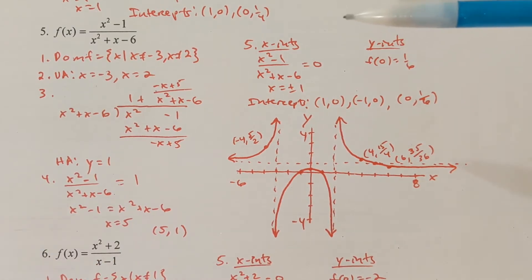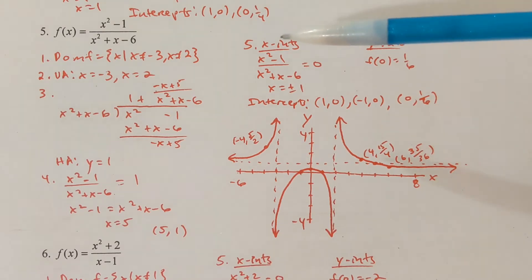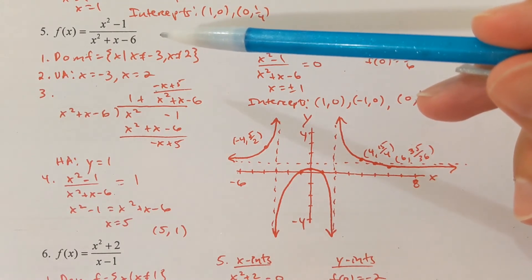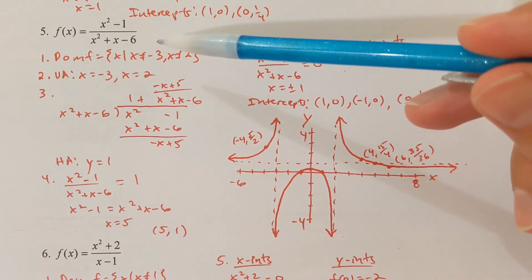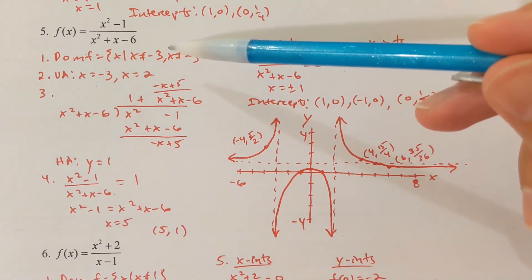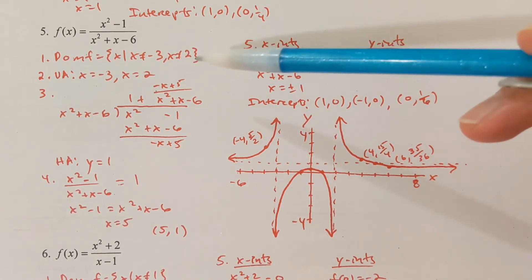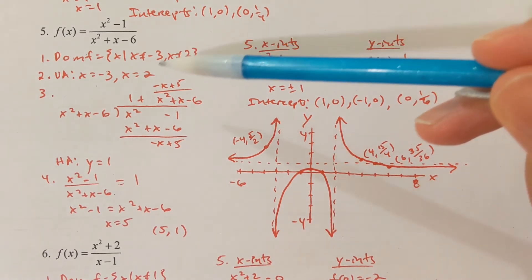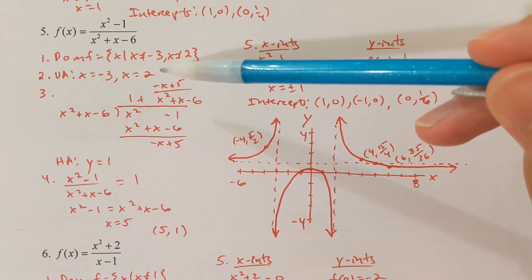Problem 5: f of x equals x squared minus 1 divided by x squared plus x minus 6. Setting the denominator equal to zero, we get x equals negative 3 and x equals 2. We can't divide by zero, so there are two vertical asymptotes at x equals negative 3 and x equals 2.